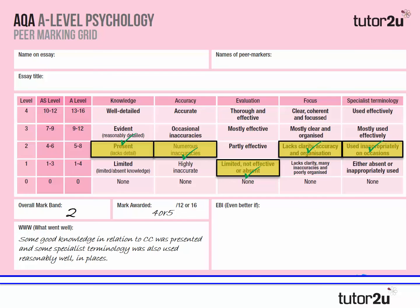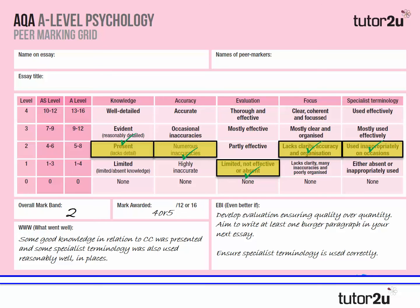At this point you can note what the student did well: there was some good knowledge in relation to classical conditioning presented, and some specialist terminology was used in places. But really what we're focusing on is what they could do to improve. What's let them down most is they need to develop their evaluation overall, ensuring quality of points over quantity. They should be writing using a P or burger paragraph structure in the next essay — that would be a definite target — and they need to use specialist terminology correctly. Just by using this grid, the whole marking process becomes significantly easier.